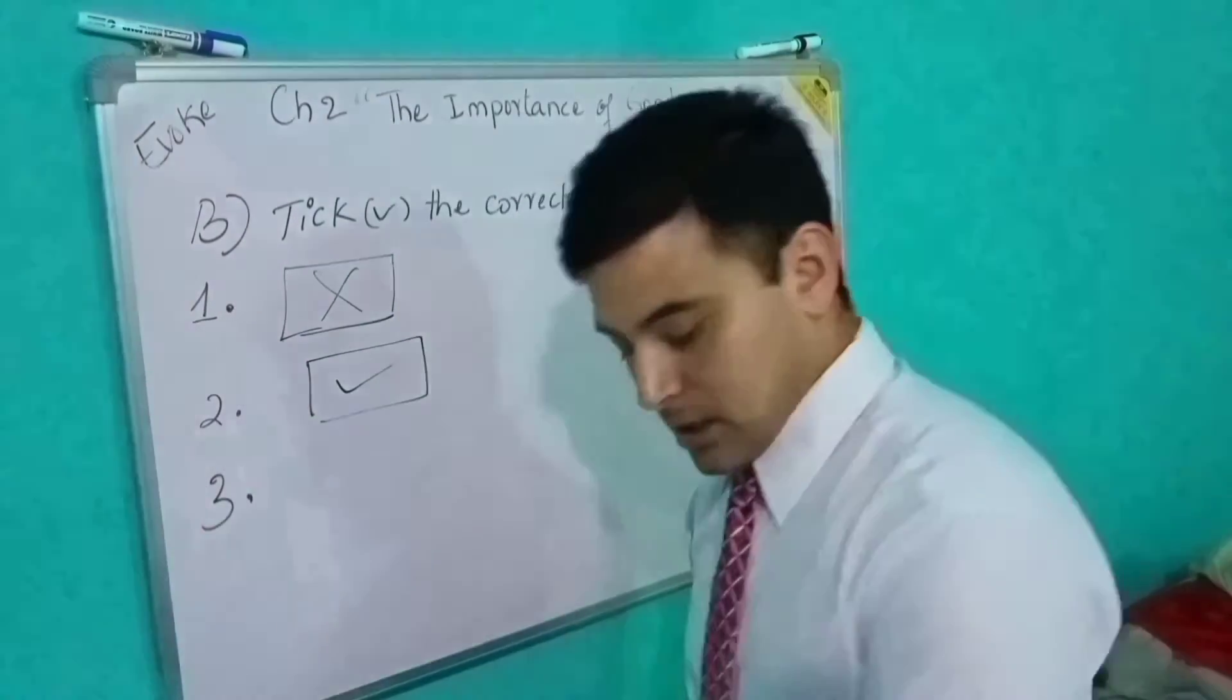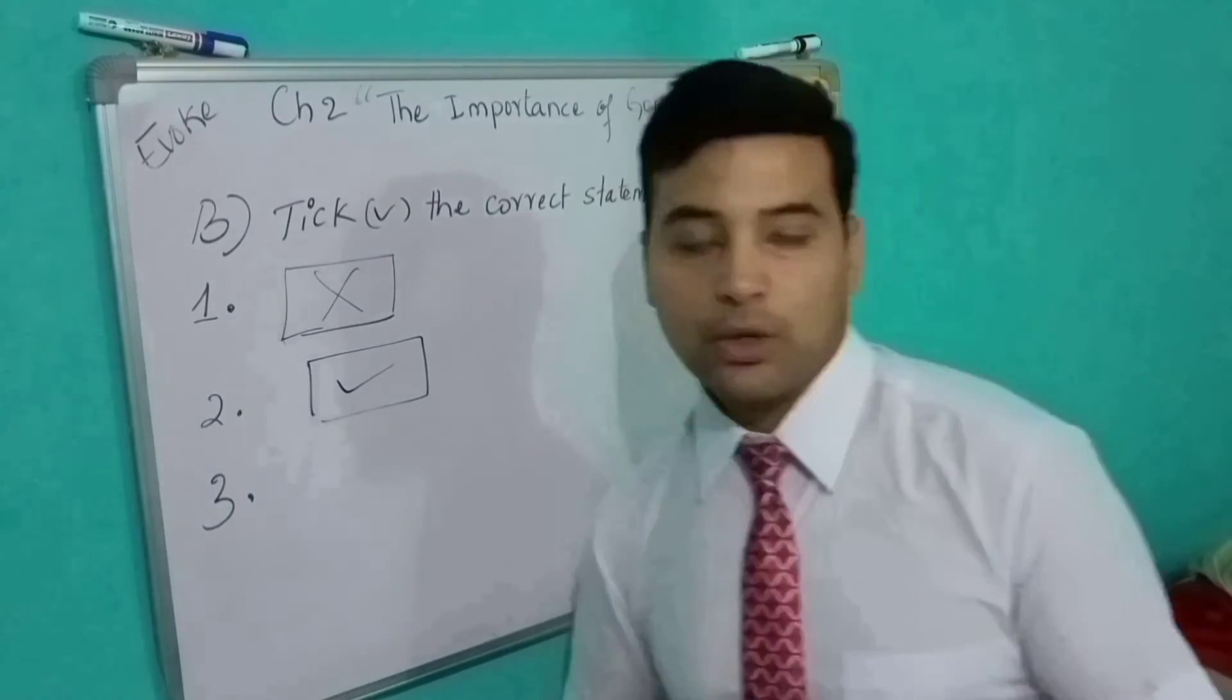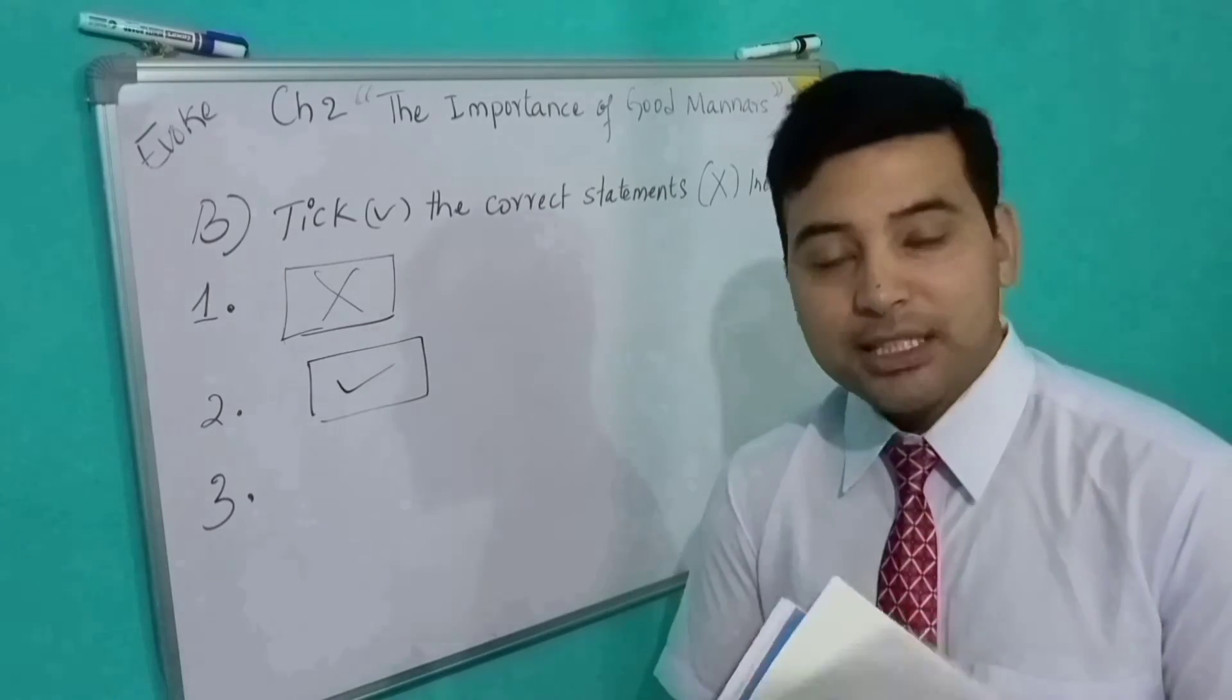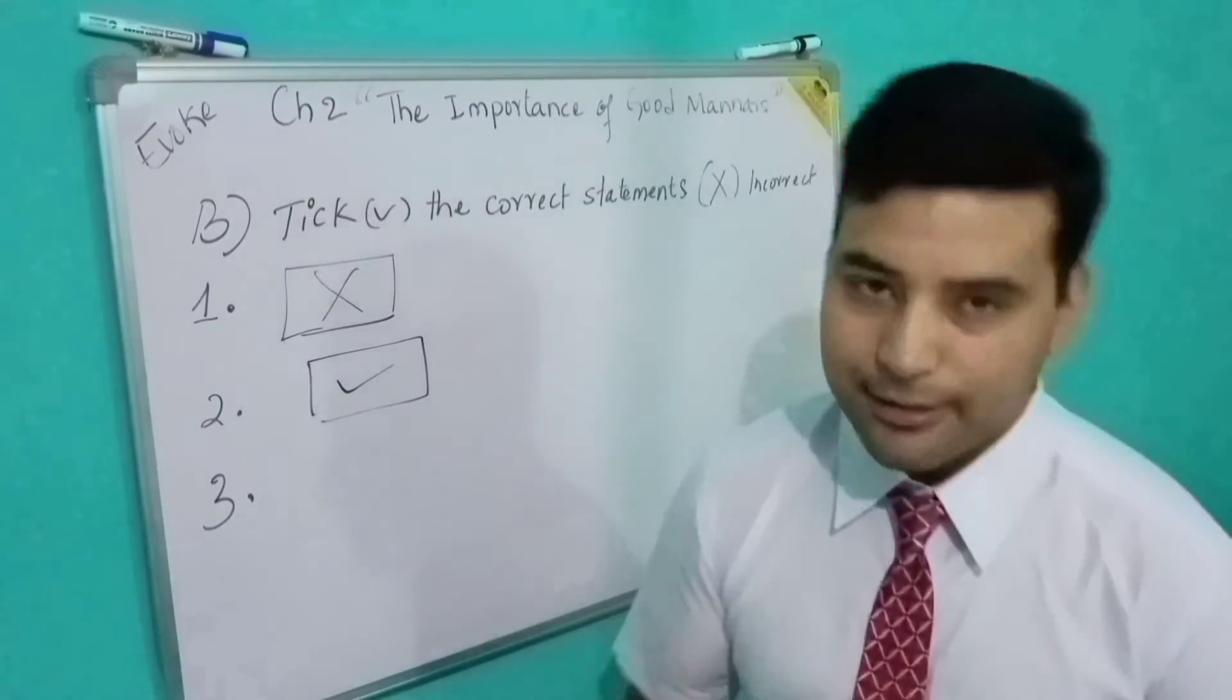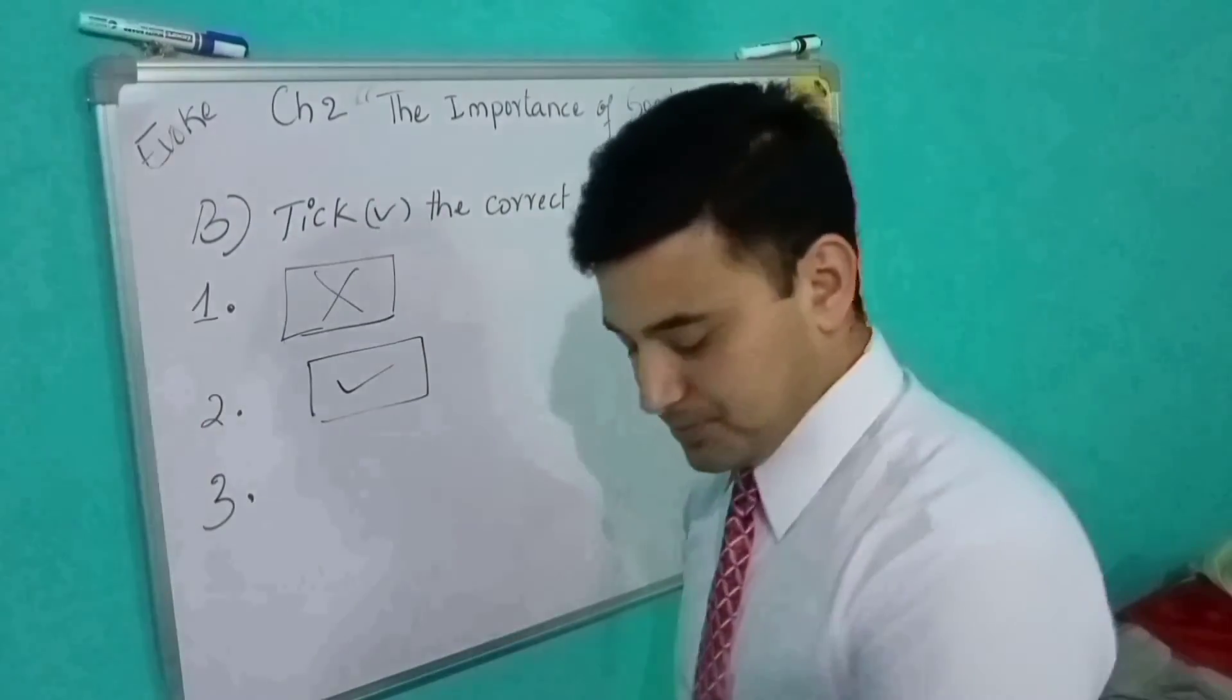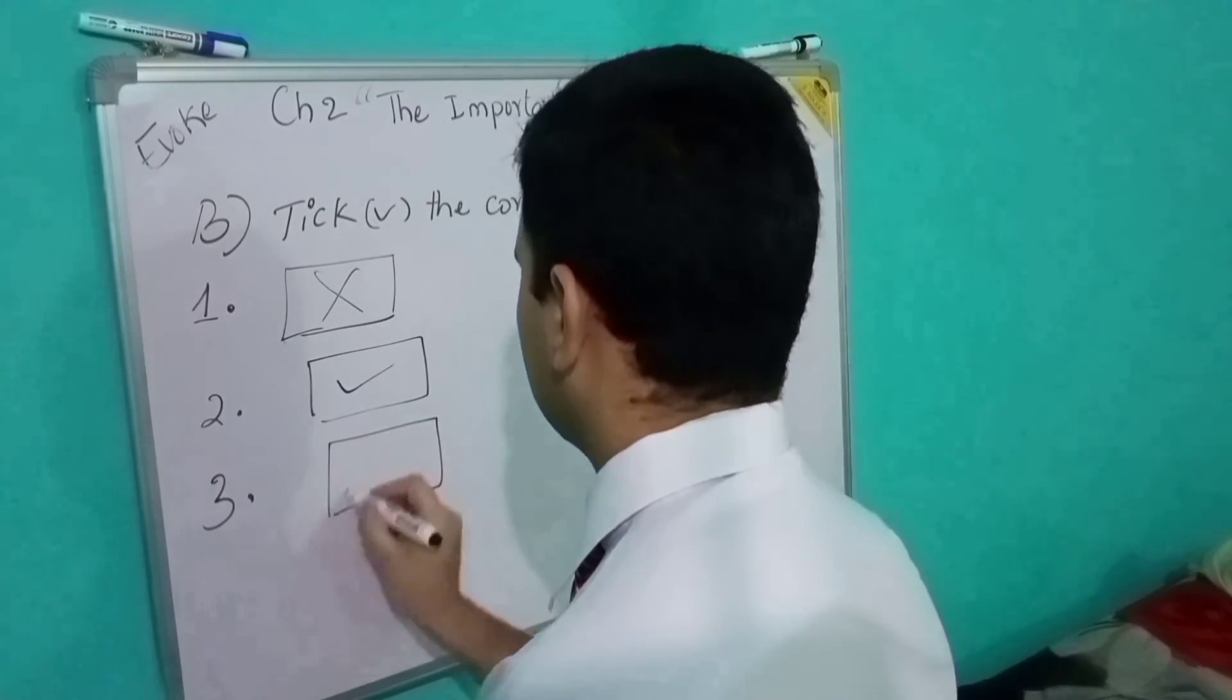Number three: The messenger gave the dean a shilling. The messenger gave the dean shilling or not? Yes, obviously. He gave British coin to the dean. So it is also correct.